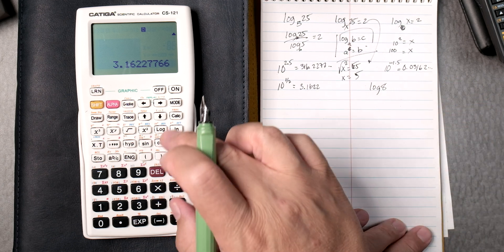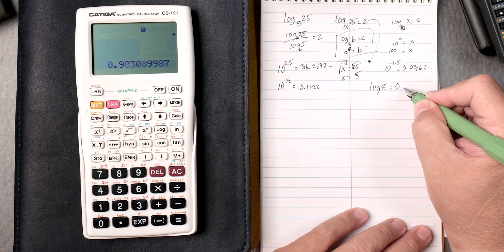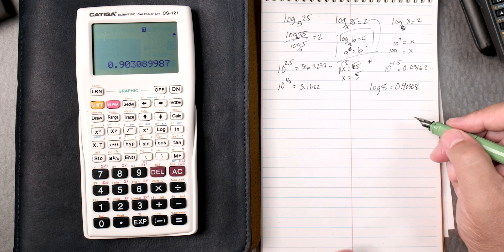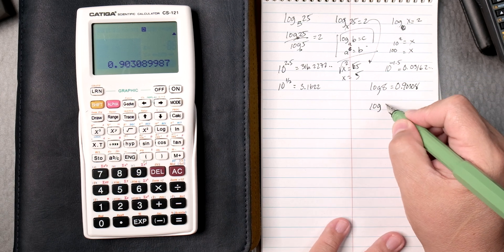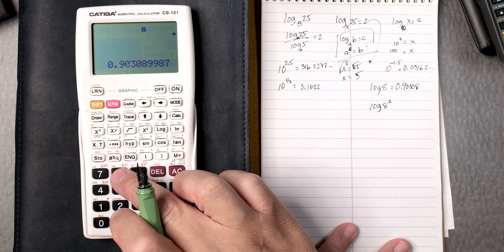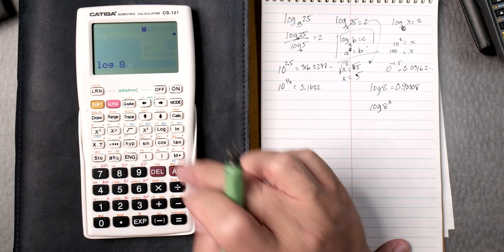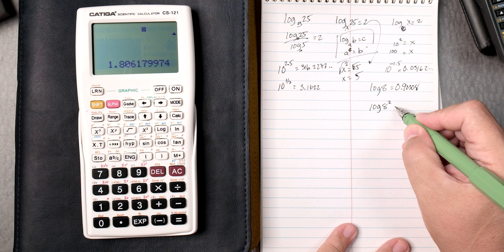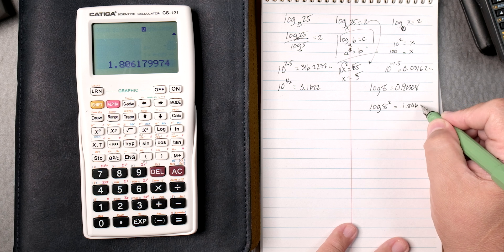How about the log of 8? If it's not written out, it's base 10. So log 8 equals, very easy, 0.90308. So how about the log of 8 squared? We go log 8 and then squared and press equals, and we get an answer of 1.806, it keeps going.